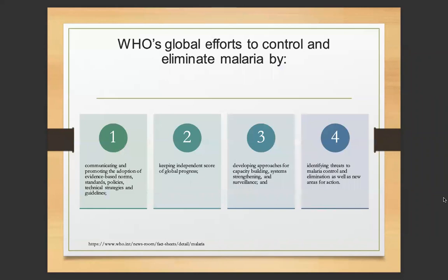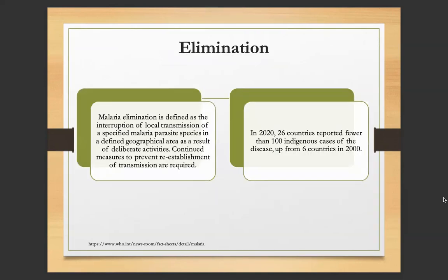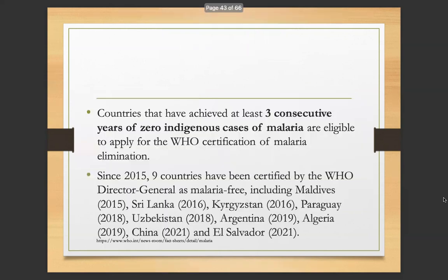WHO's global efforts to control and eliminate malaria include: communicating and promoting the adoption of evidence-based norms, standards, policies, technical strategies and guidelines; keeping an independent score of global progress; and developing approaches for capacity building, systems strengthening, and surveillance, while identifying threats to malaria control and elimination. Malaria elimination is defined as the interruption of local transmission of a specific malaria parasite species in a defined geographical area. In 2020, 26 countries reported fewer than 100 indigenous cases, up from six countries in 2000. Countries achieving three consecutive years of zero indigenous cases are eligible for WHO certification of malaria elimination. Since 2015, nine countries have been certified malaria-free: Maldives, Sri Lanka, Kyrgyzstan, Paraguay, Uzbekistan, Argentina, Algeria, China, and El Salvador.